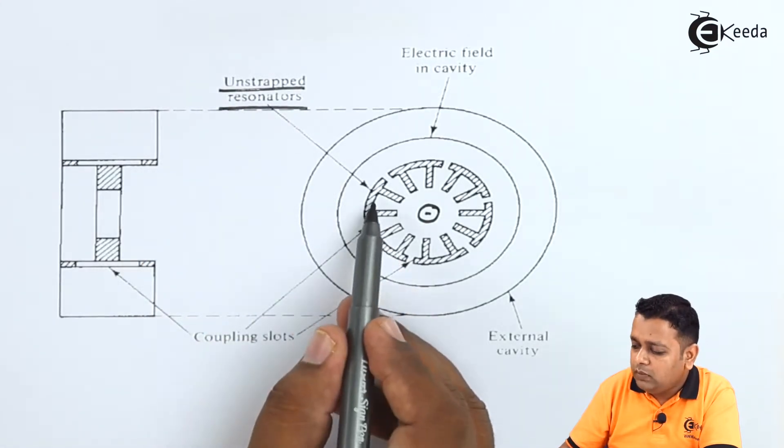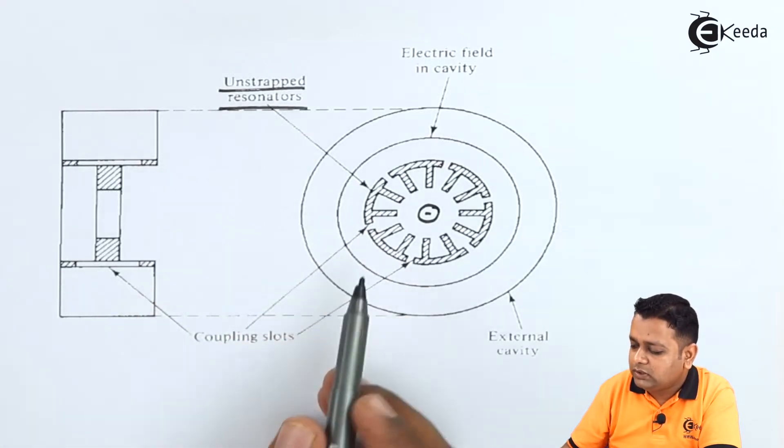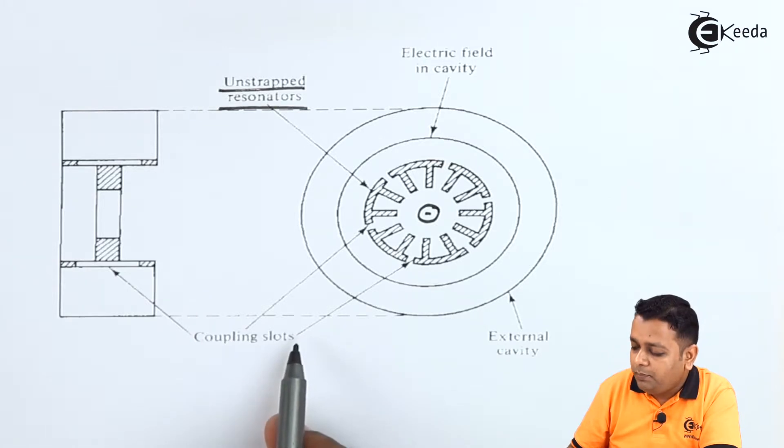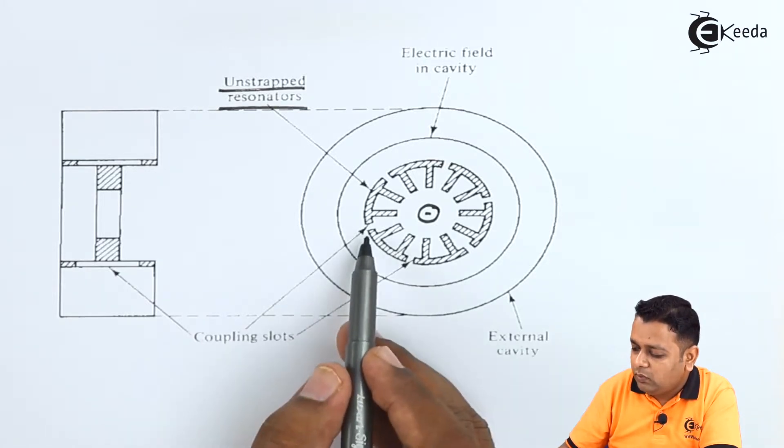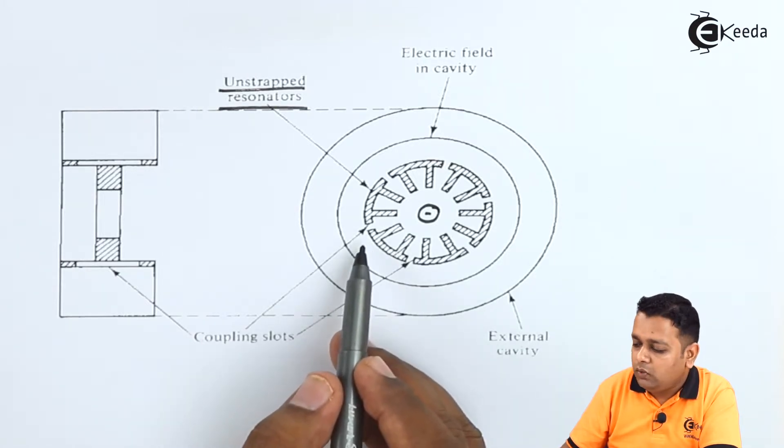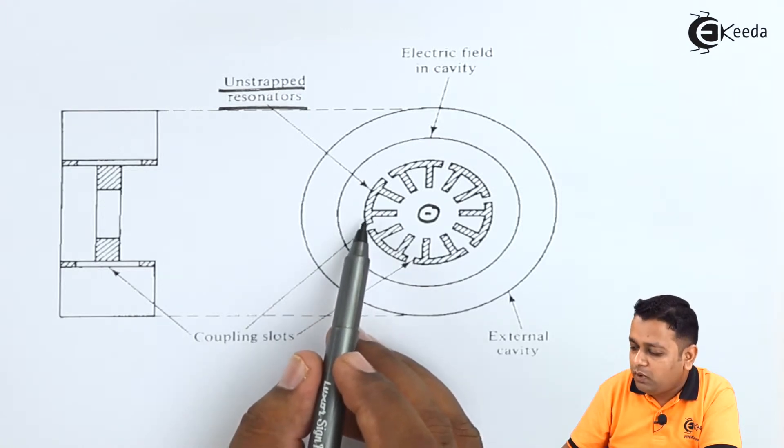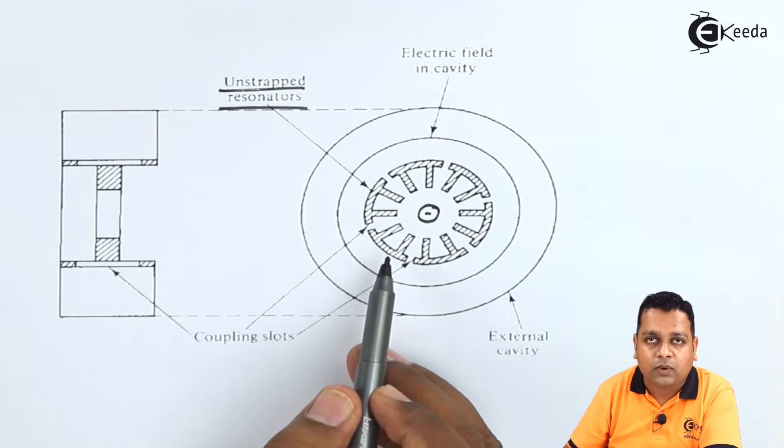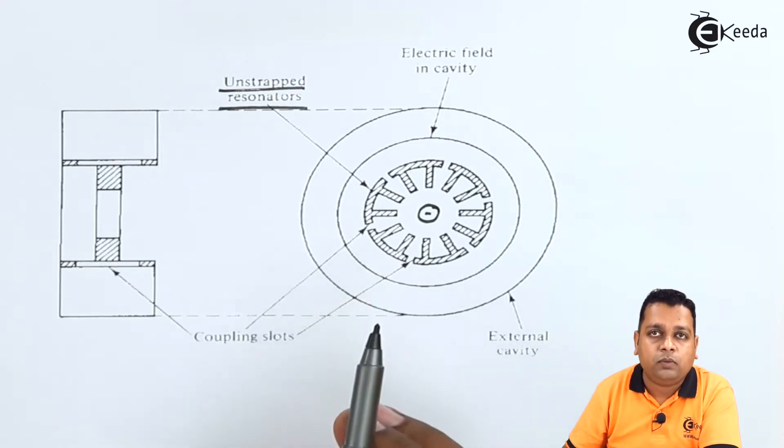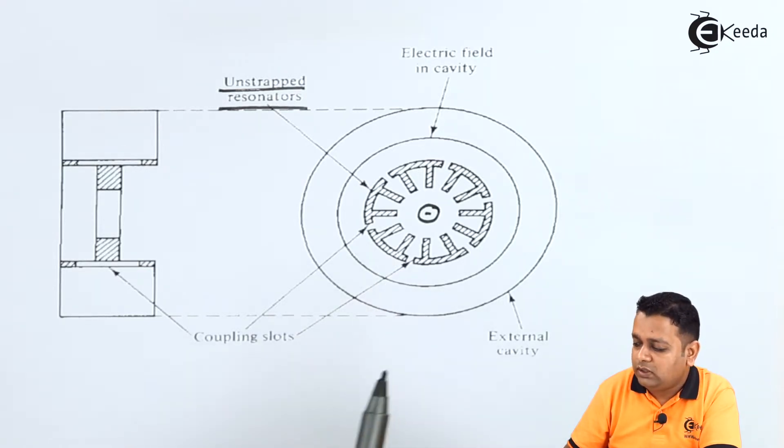And in between the unstrapped resonators, these are the coupling slots provided. So the coupling slots at the body of this particular anode will have a proper coupling of the energy from one cavity to another cavity, giving good performance with respect to the coaxial magnetron here.